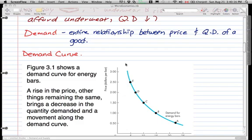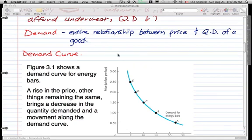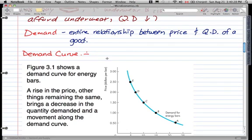So we're back. From the last video, we find that demand is the entire relationship between price and quantity demanded of a good. Now, the demand curve simply shows this. The demand curve shows demand.